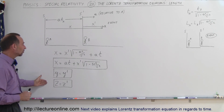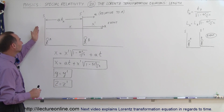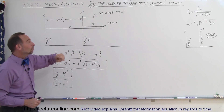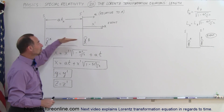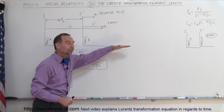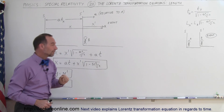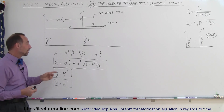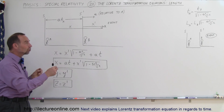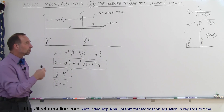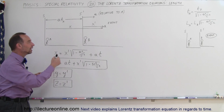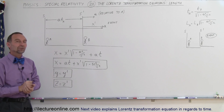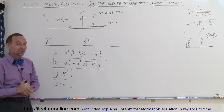These are the three Lorentz transformation equations going from the stationary reference frame to the moving reference frame, assuming the moving reference frame travels only in the X direction at velocity U. This is how we convert the position or location of an event from one reference frame to the other.